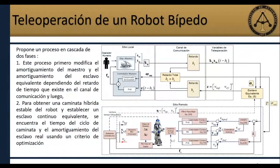¿Cuál es la propuesta de este trabajo? Se trata de tener una teleoperación bilateral estable. Para lograrlo, se propone un proceso en cascada para calibrar los parámetros de control. En el sitio local se calibra el amortiguamiento del maestro, y en el sitio remoto se calibra el amortiguamiento del esclavo. Esto es en función del retardo de tiempo que existe en el canal de comunicación, tanto de transmisión H1 como de percepción H2.